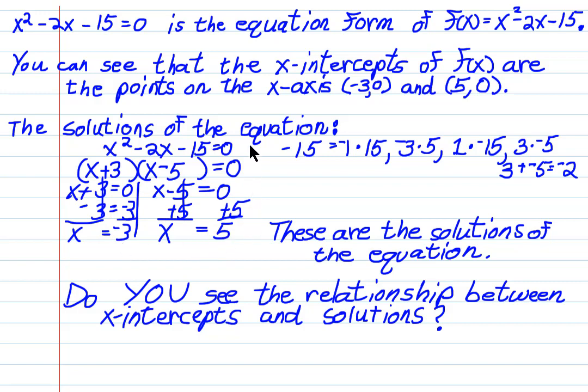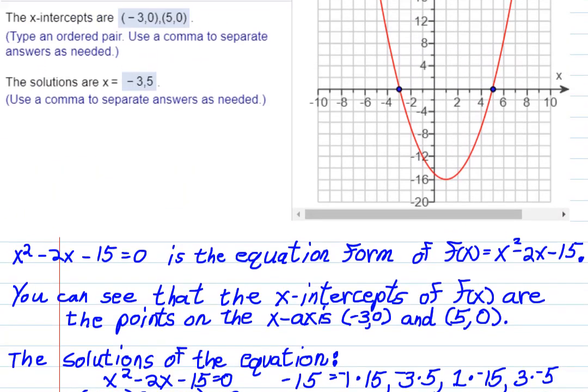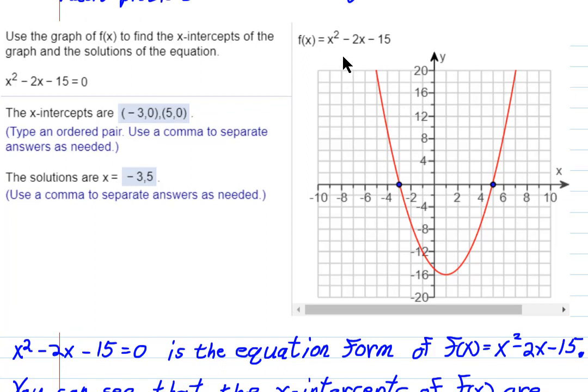And those are the solutions to the equation version of the function, x² - 2x - 15. What does that mean? When you solve the equation version of the function, the answers you get, when they're not complex numbers, are numbers on the x-axis, and those are the x-intercepts of the graph.